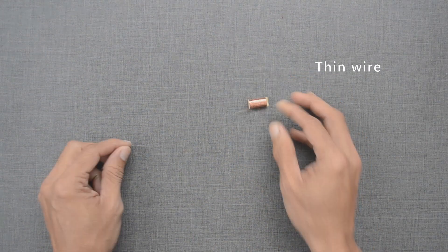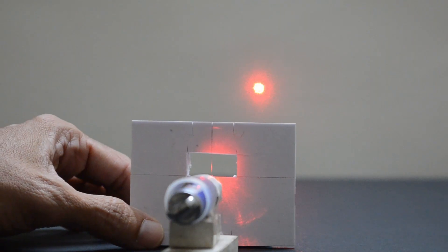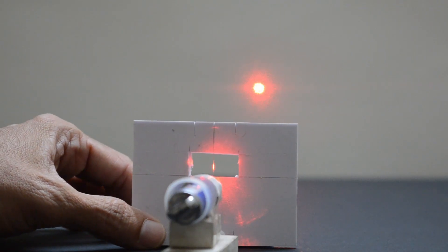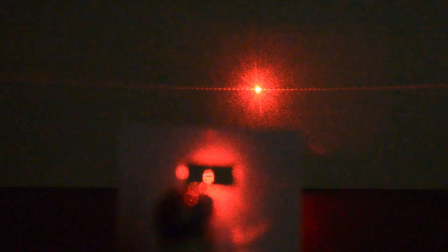Instead, we can replace this with a very thin wire taken out from the clock winding. We will wrap it around a card sheet and bring it in the path of the light. A beautiful pattern of bright as well as dark regions is seen on the screen. These are also known as fringes.